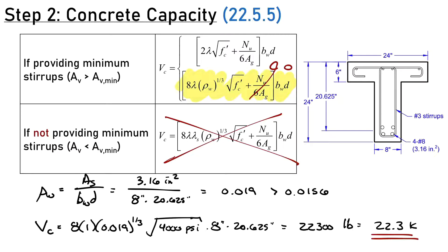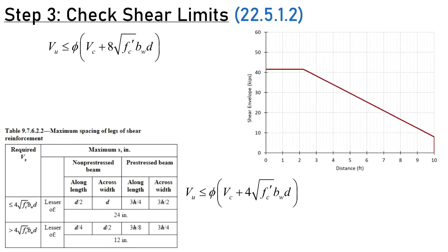Now we'll check a few shear limits before designing stirrups. The first limit I'll call the hard limit. According to the code, you are not allowed to have a demand above this number. Checking: phi 0.75 times VC 22.3 kips plus 8 times square root of F'C times BW times D equals 83.5 kips. Is VU less than or equal to 79.4 kips? Yes, so we're okay for that limit.